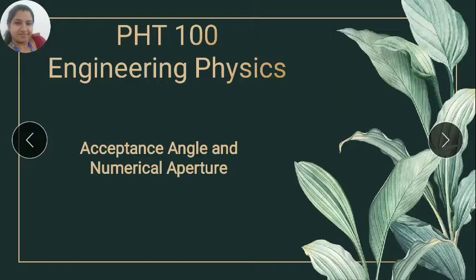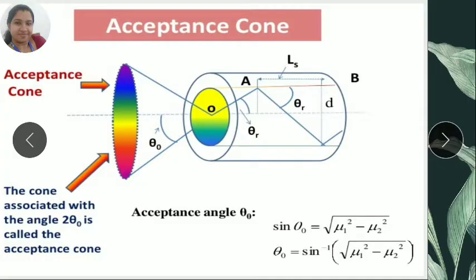Today's session is on acceptance angle and numerical aperture of optical fiber. Acceptance angle is the maximum angle of incidence of an optical fiber that will transmit light by total internal reflection. We can explain that concept through this diagram.